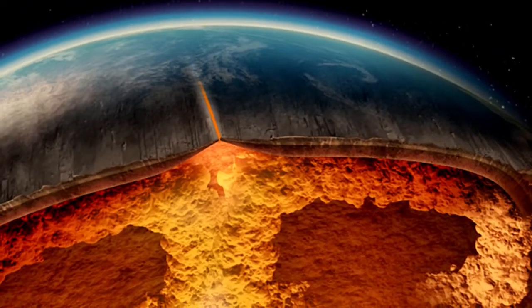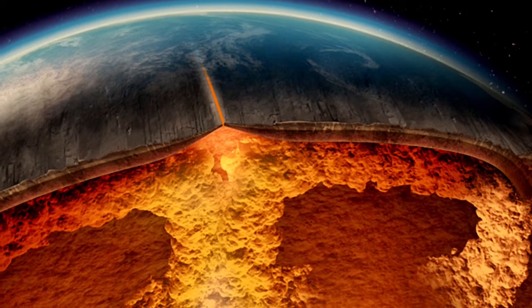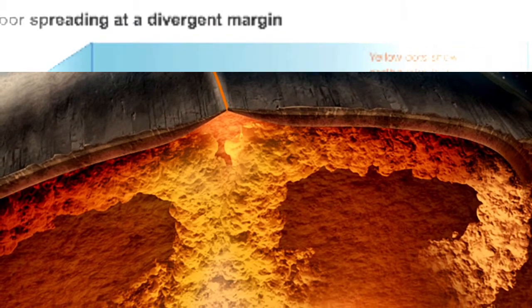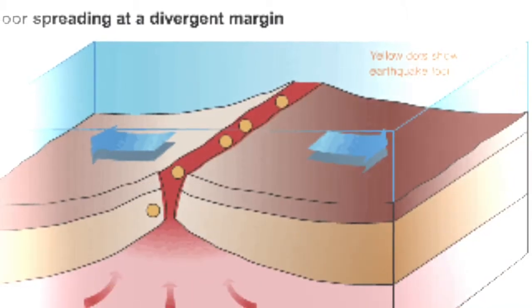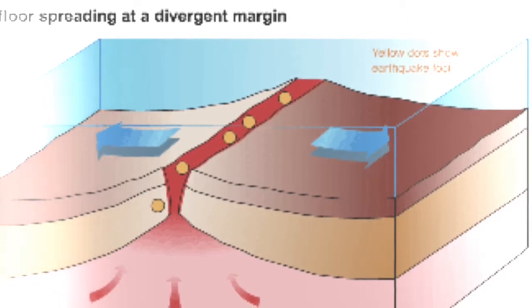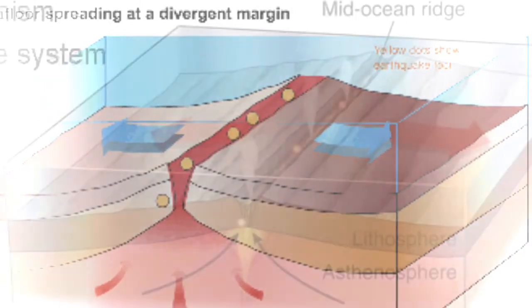Magma, liquid rock, seeps upward to fill the cracks. New crust is formed along the boundary. Earthquakes happen along the boundary. Divergent boundaries form volcanic islands.